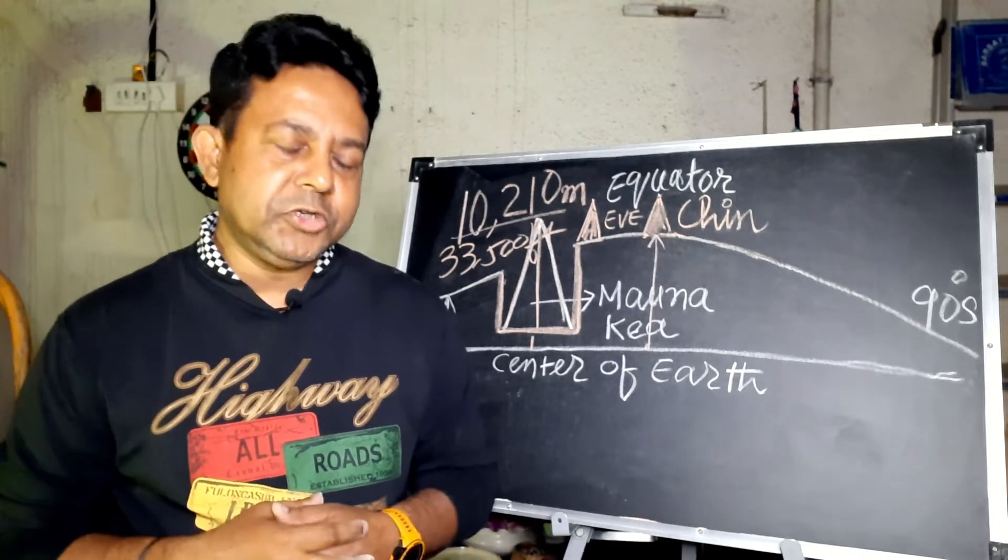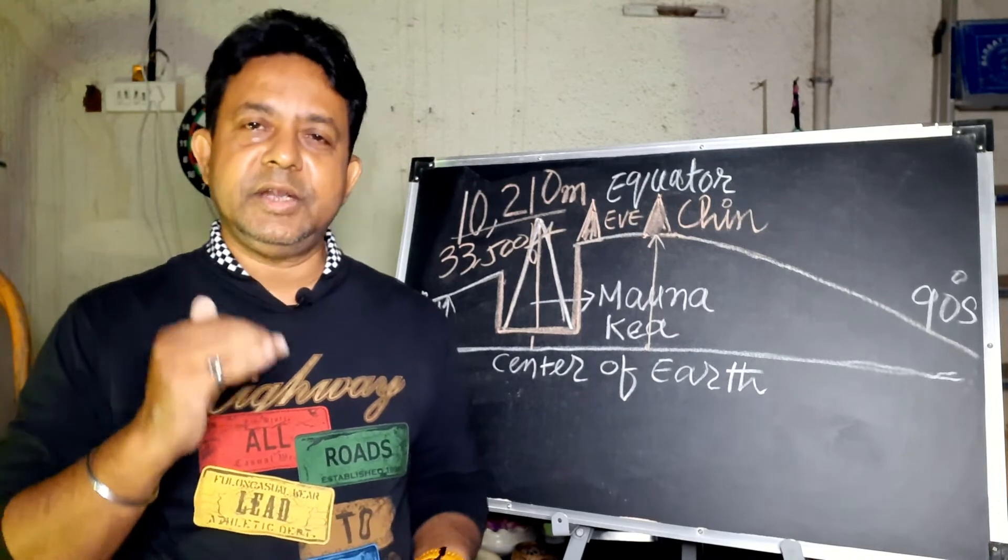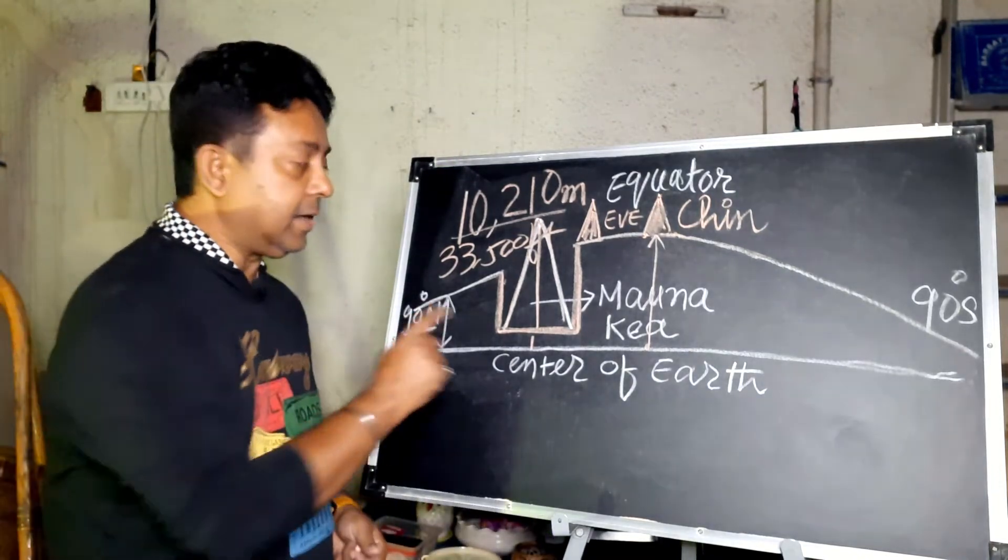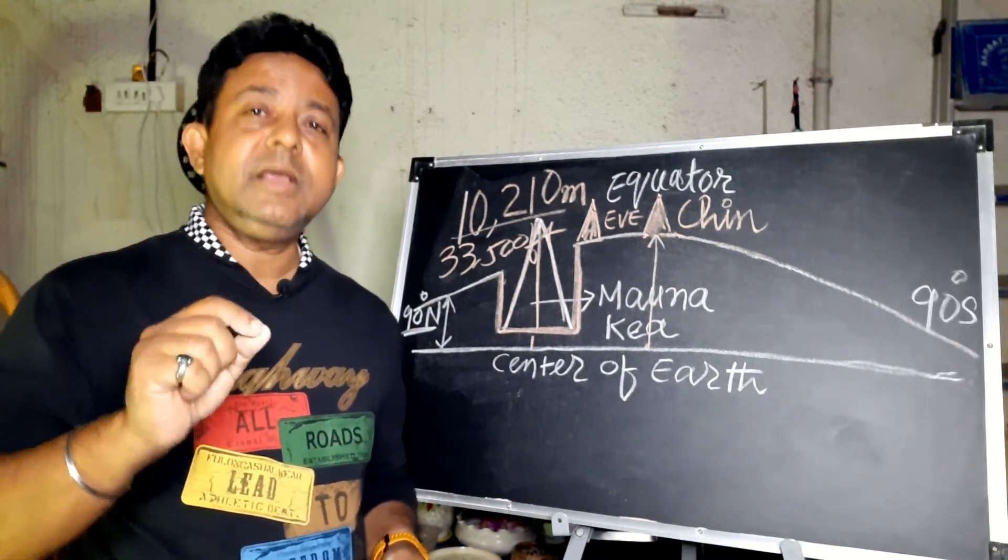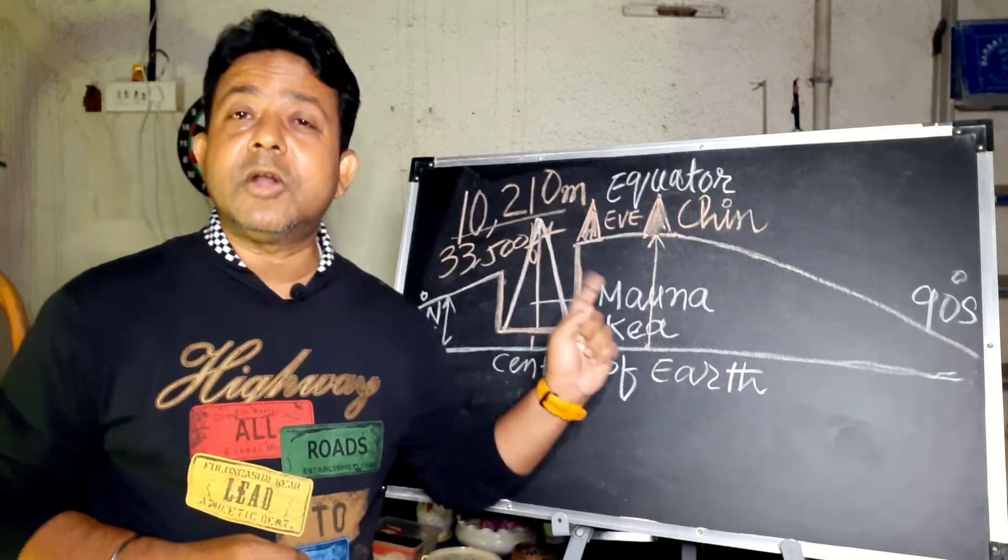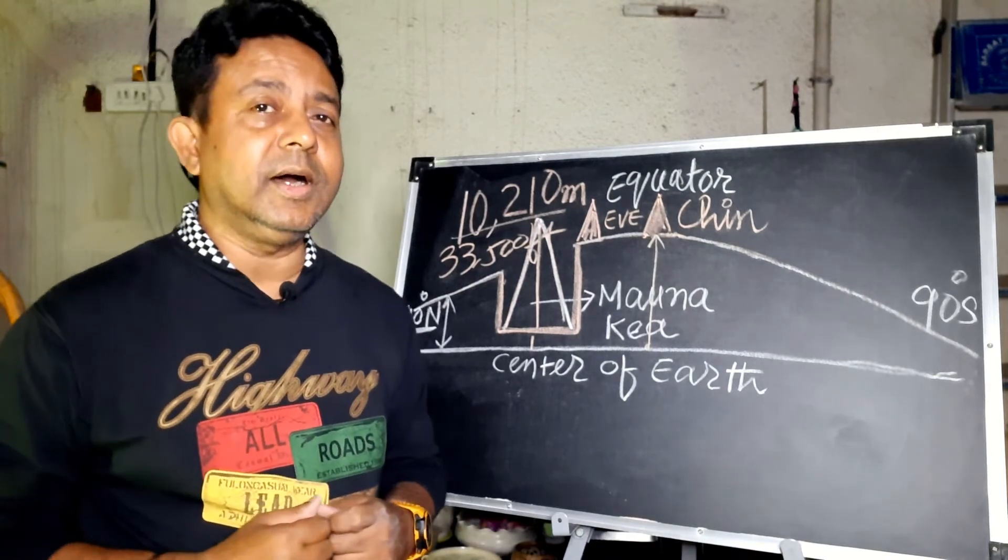So in conclusion, we can say that Mount Everest is tallest if you are measuring it from the global mean sea level. Mount Monarchia, which is in Hawaii, is tallest if you are measuring it from the base of the mountain. And Mount Chimborazo is tallest if you are measuring it from the center of the Earth.